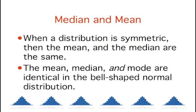There are two important final points to note when thinking about means and medians. When a distribution is symmetric, then the mean and the median are the same. Moreover, the mean, median, and the mode are identical in a bell-shaped normal distribution.